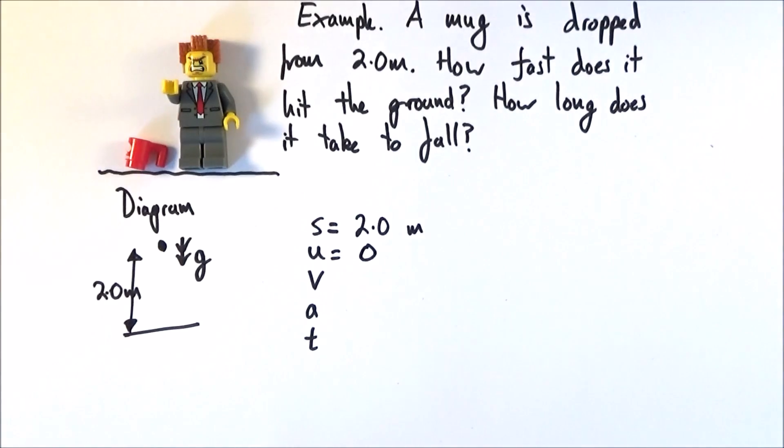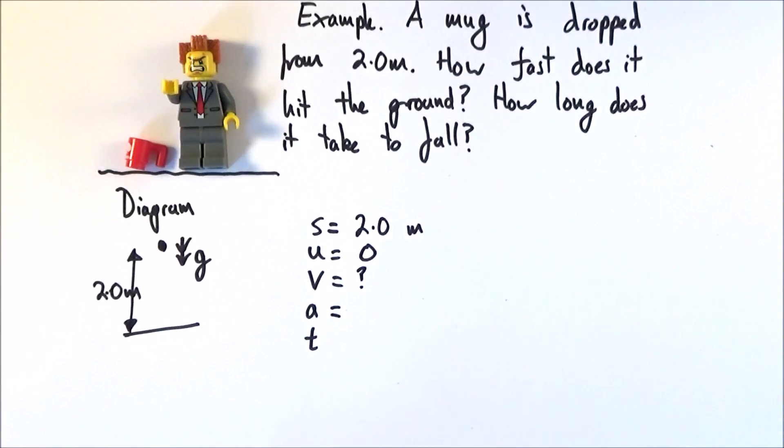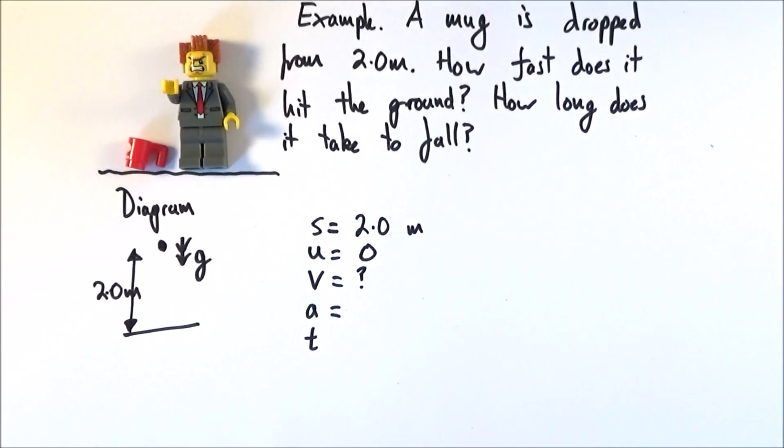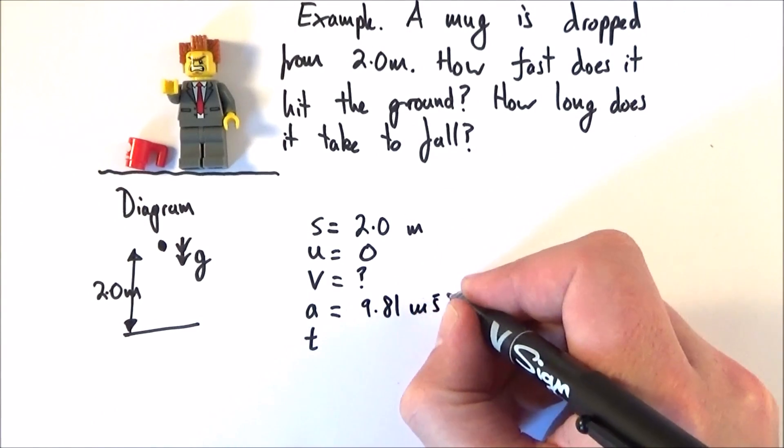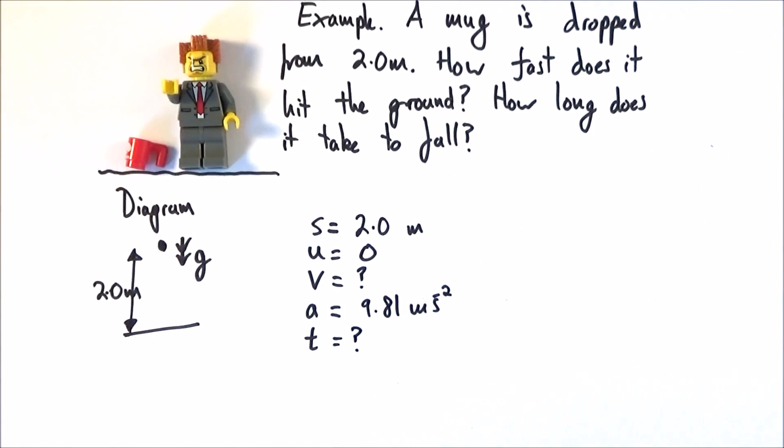Do we know how fast it hit the ground? No, we don't. But we want to find it out. Do we know the acceleration? Well, if this is on Earth, which most things are, then we can say the acceleration is equal to the acceleration due to gravity, which equals 9.81 meters per second squared. Do we know the time? No, we don't.